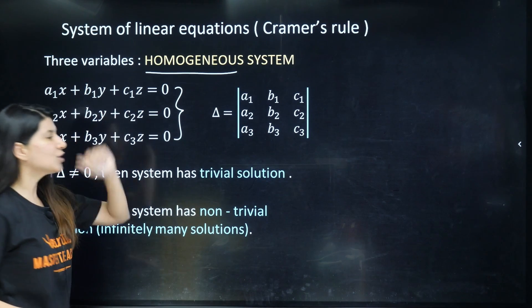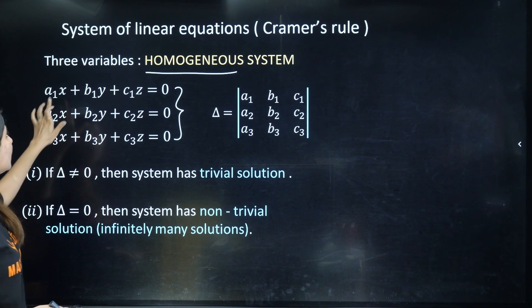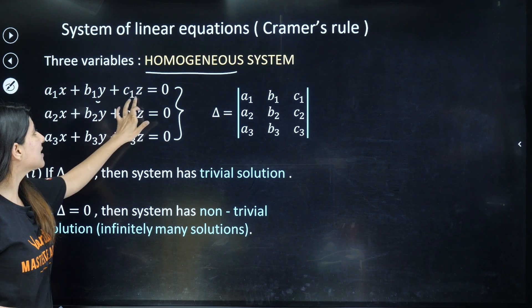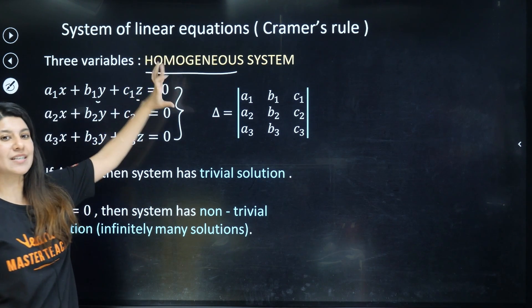We are studying homogeneous systems. In a homogeneous system, we have been given three equations related to three unknowns. Three variables are involved but you can see the constant is zero. Hence, we call it a homogeneous system.